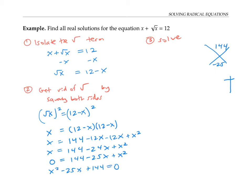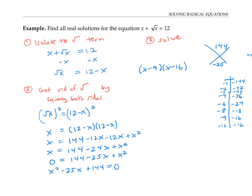Listing factors of 144: negative one and negative 144, negative two and negative 72, negative four and negative 36, and so on. It's not hard to find the two that add to negative 25: that's negative nine and negative 16. So the quadratic factors as (x minus 9)(x minus 16) equals 0, giving x equals 9 or x equals 16.